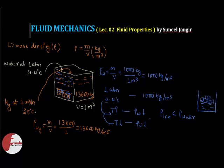Similarly, for air at 1 atmospheric pressure and 25 degree centigrade, the density is 1.23 kg per meter cube. These are standard values. So the concept of density is: it is the amount of matter per unit volume.